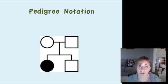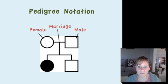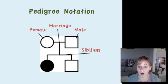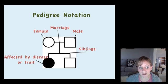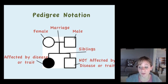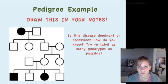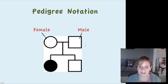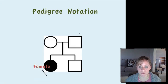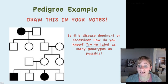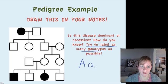Here's the notation you'll need for pedigree practice in class. Circles identify females and squares identify males. The line between them signifies a marriage, and the line coming off them leads to their children and siblings. If a symbol is filled in, that person is affected by the disease; if it's not filled in, that person is unaffected. Here's an example pedigree to draw in your notes — analyze it and determine: is this disease inherited dominantly or recessively, and how do you know? Then try to label as many genotypes as possible, using big A for dominant and little a for recessive.